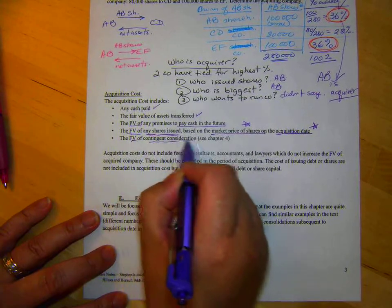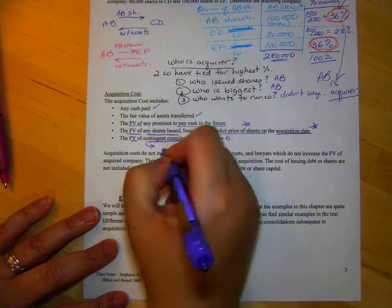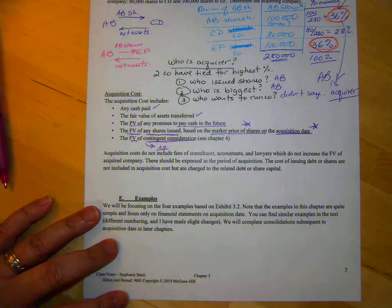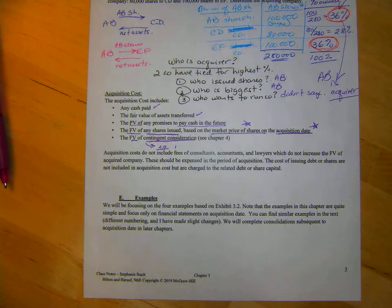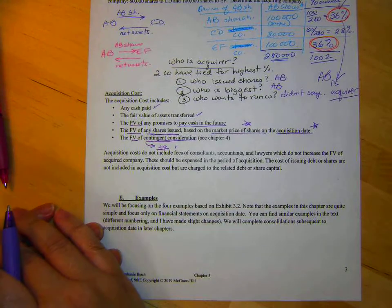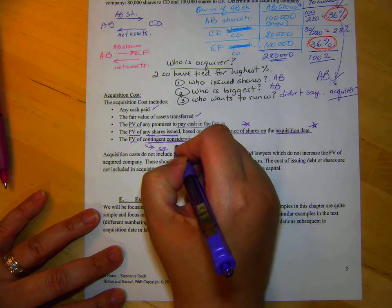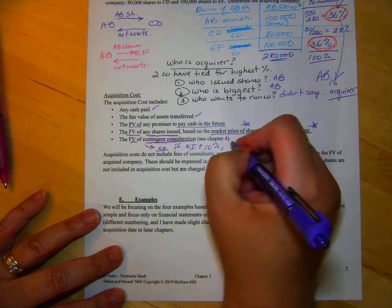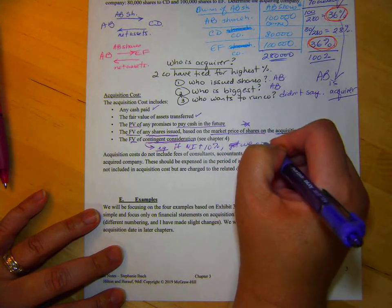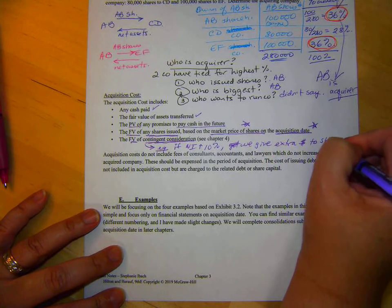Now, the other thing that goes into the acquisition cost. The fair value of contingent consideration. You're basically going to see Chapter 4 for that. We won't talk about it a whole lot. But, let's say, if we wanted to keep everybody working hard in the company we just took over. We could offer a bonus payment to shareholders or something. So, for example, if net income goes up by 10% again, yet we give extra money to shareholders or something like that.